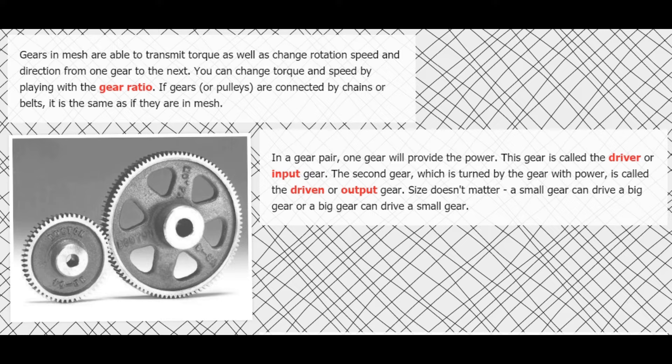By manipulating the gear ratio — the ratio of the relative sizes of the gears — we can change the torque. We can change the speed of the gear and therefore the speed of an output shaft that is attached to the driven gear.